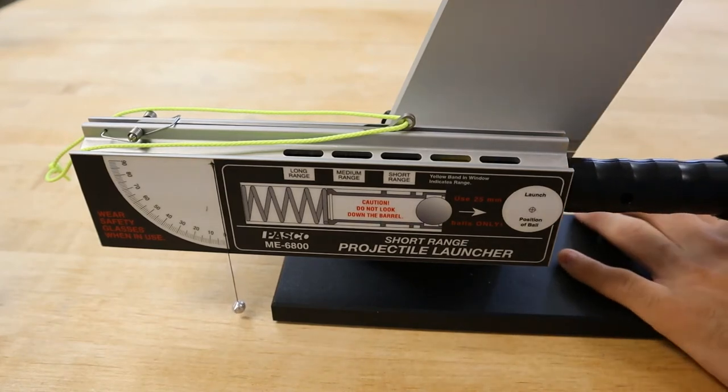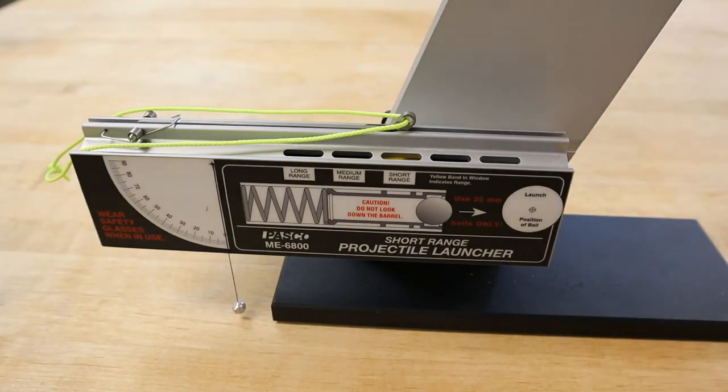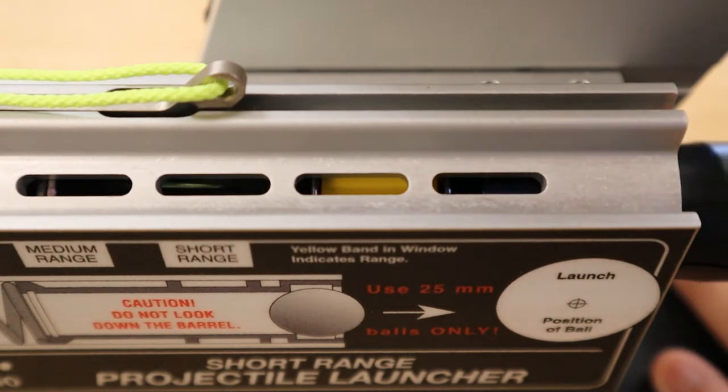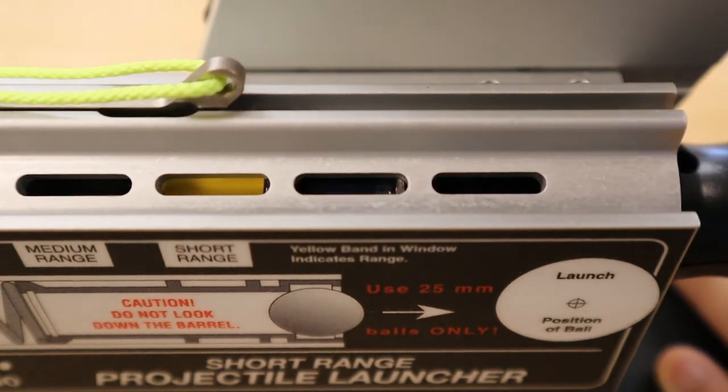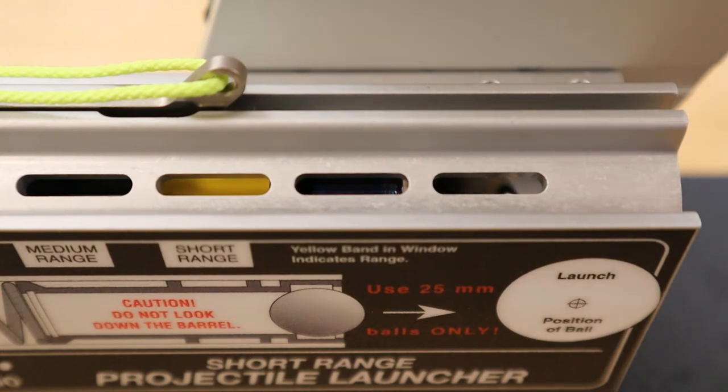Using this ramrod, we can compress the spring to three different levels, but for this first set of tests, we will start at the lowest level. An audible click can be heard when this first setting is reached, and an indicator can be seen through the side of the launcher.